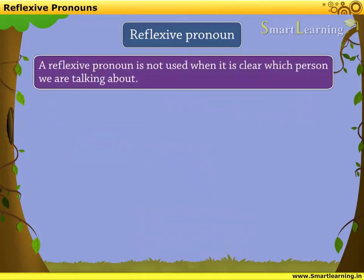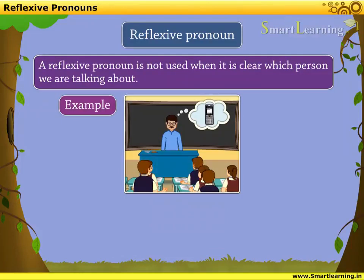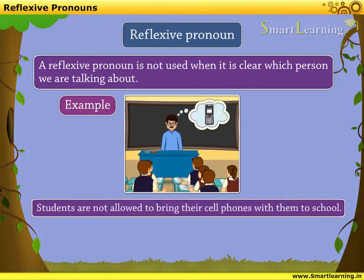A reflexive pronoun is not used when it is clear which person we are talking about. For example: students are not allowed to bring their cell phones with them to school. In this example, we have used 'them' instead of 'themselves' because it is clear that 'them' refers to students only and nobody else.